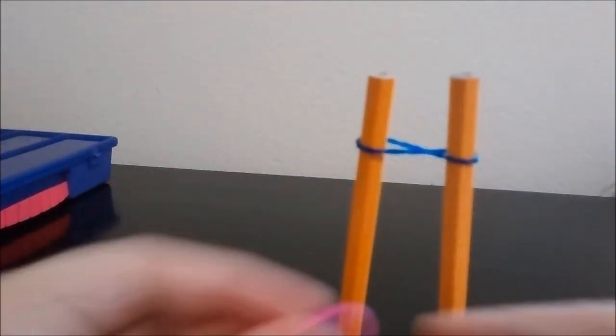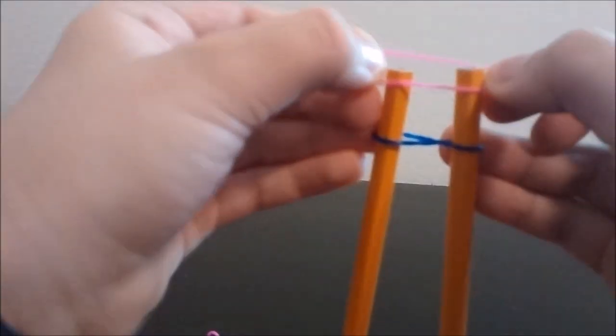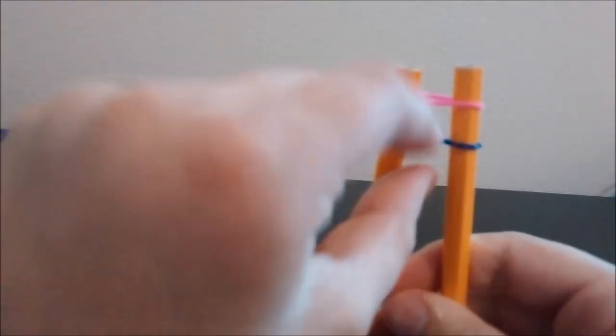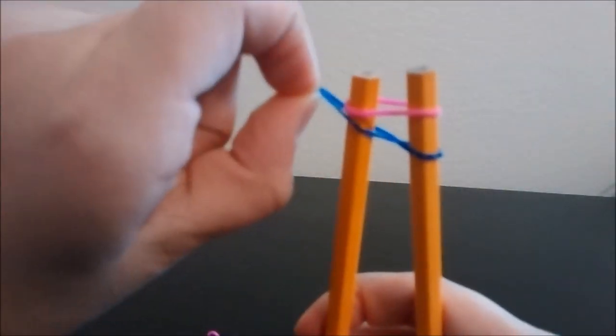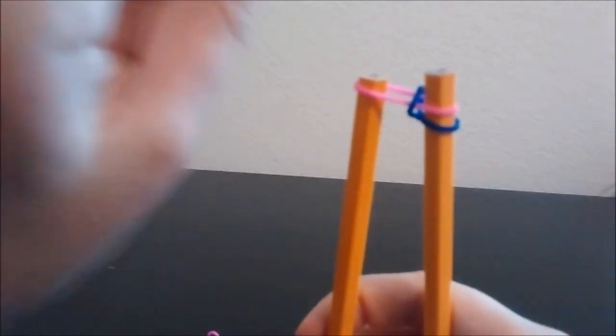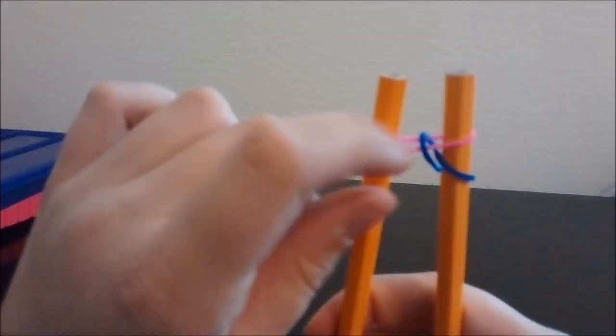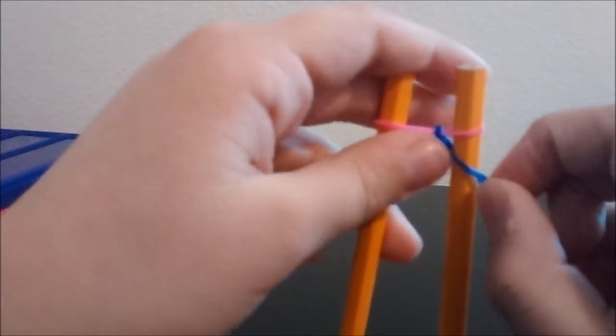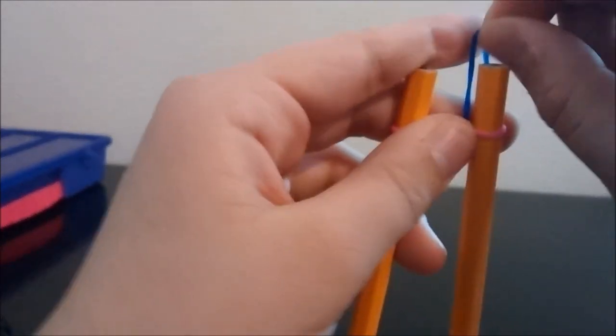So now I'm going to take my next color, which is pink, and place it on top. Once you do that, you're going to pull the bottom up and over your pink. Make sure you push your bands down so they don't come off. Then you're going to take your other one and pull it over.